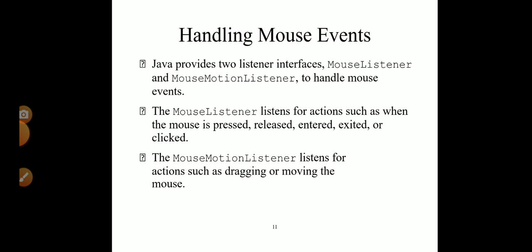Next we are going to discuss how we can handle mouse events. Java provides two listener interfaces for the mouse: one is mouse listener and another is mouse motion listener. Mouse listener listens for actions such as when the mouse is pressed, released, entered, exited, or clicked. Mouse motion listener is used when we are dragging or moving the mouse.